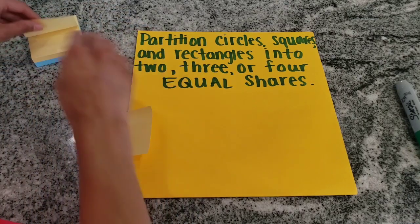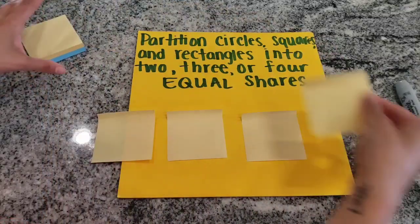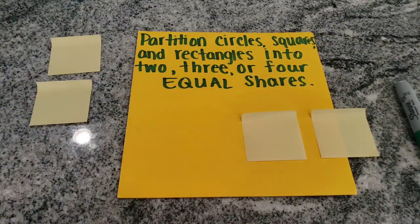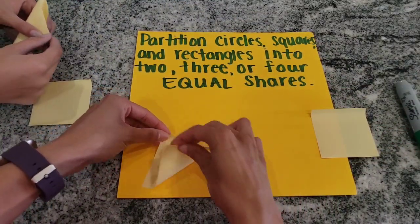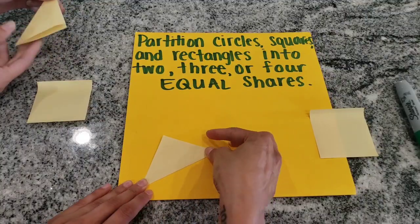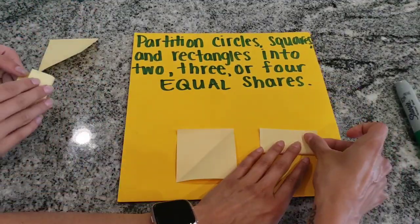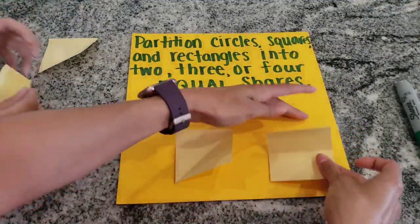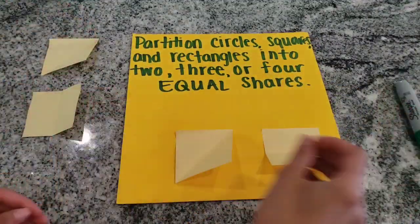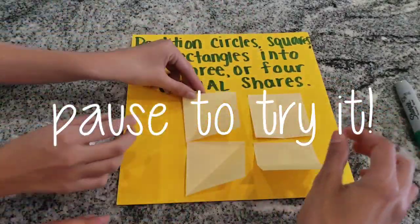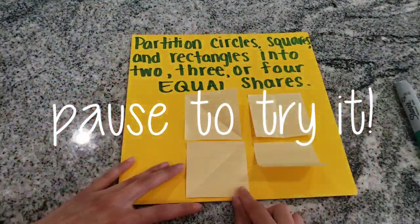I want you to try this activity at home. Get four pieces of paper that are cut into squares — post-its or napkins work. Try and partition them in halves. That's two equal shares. How many different ways can you get halves?